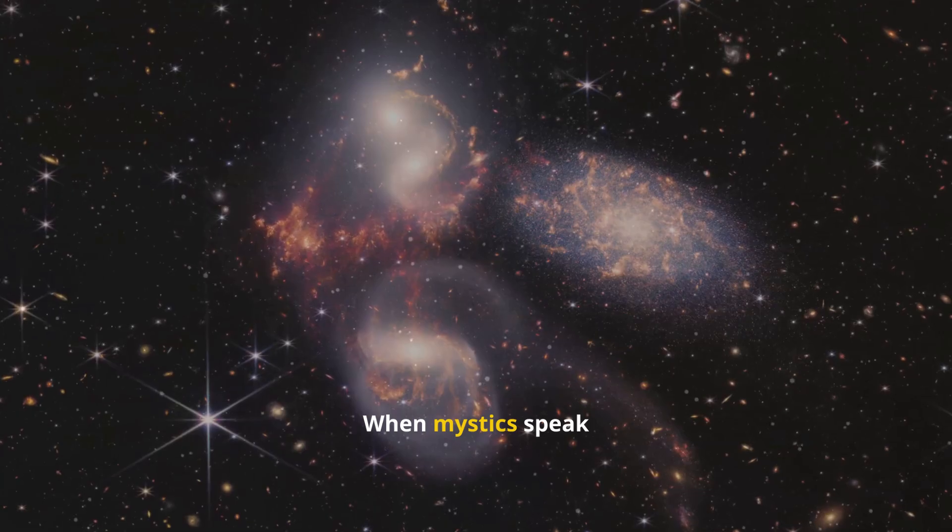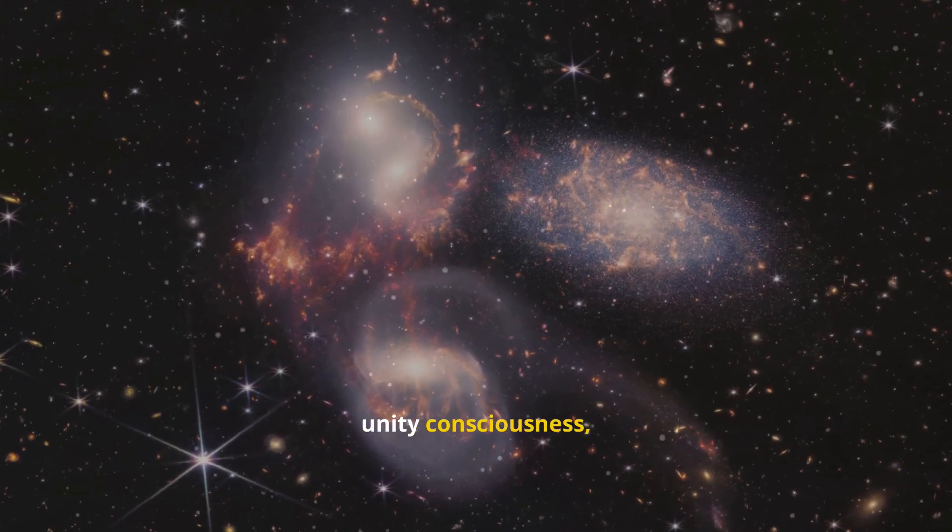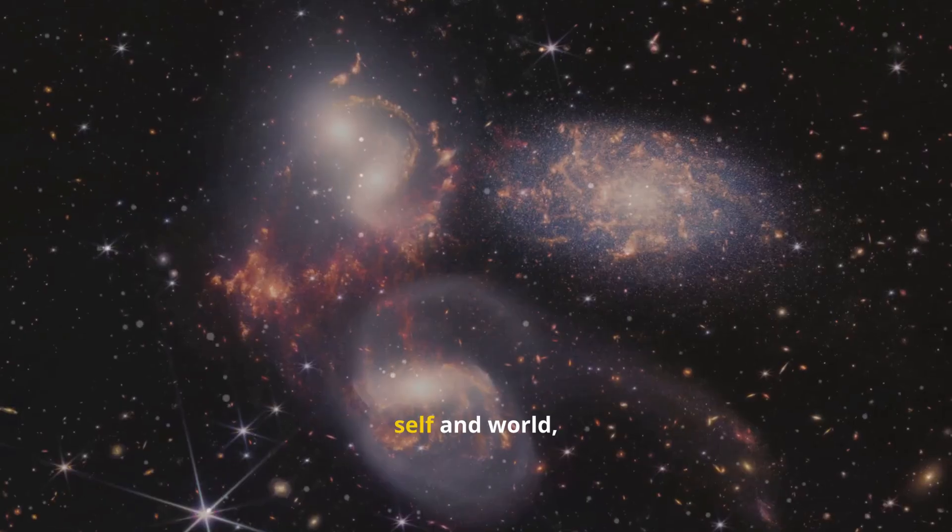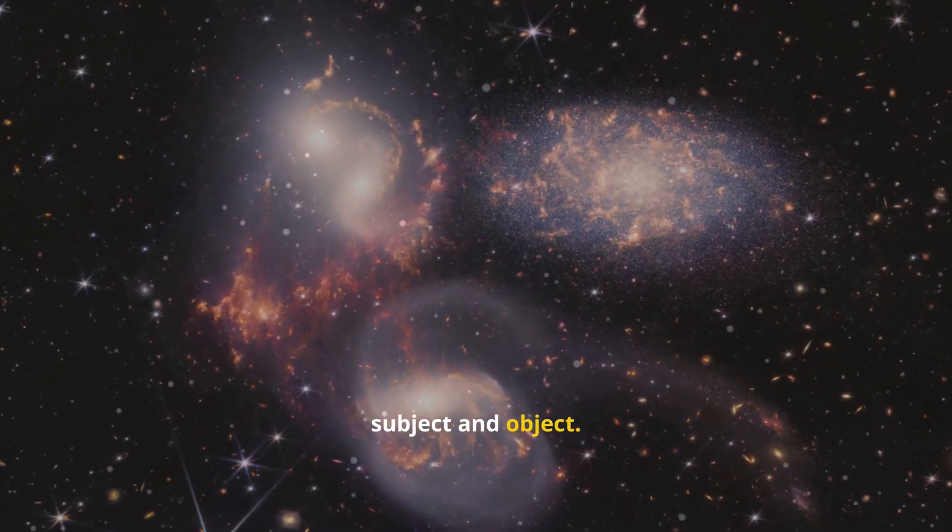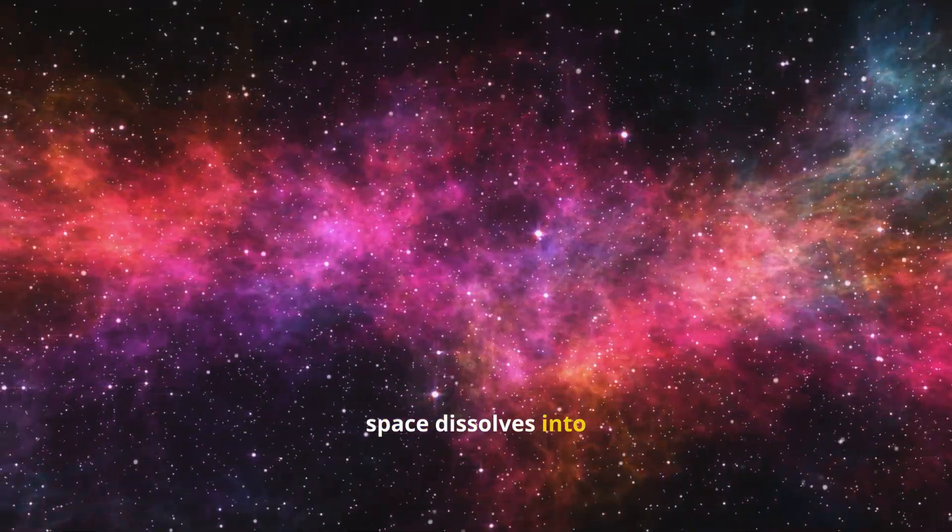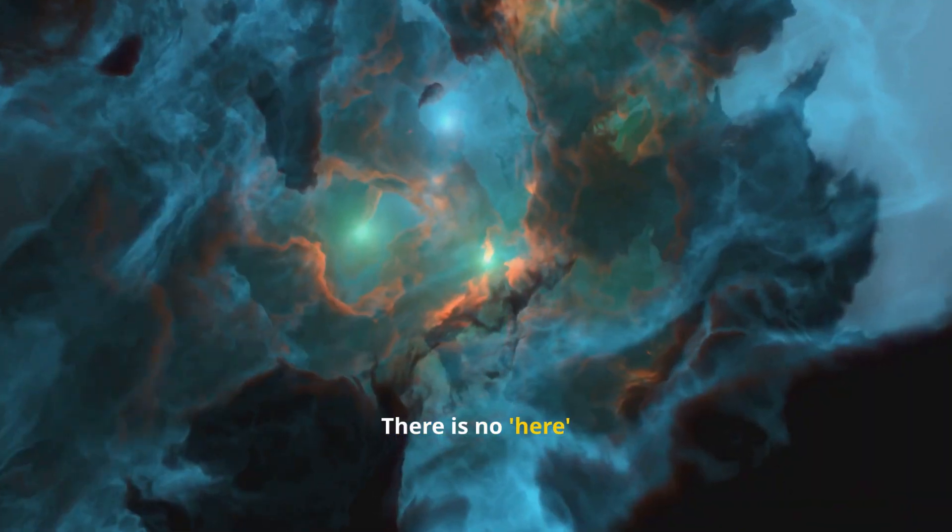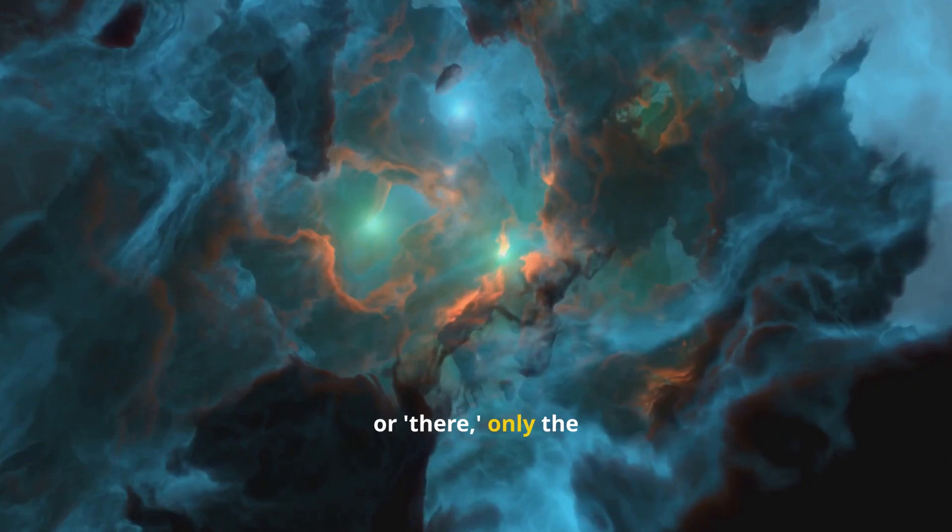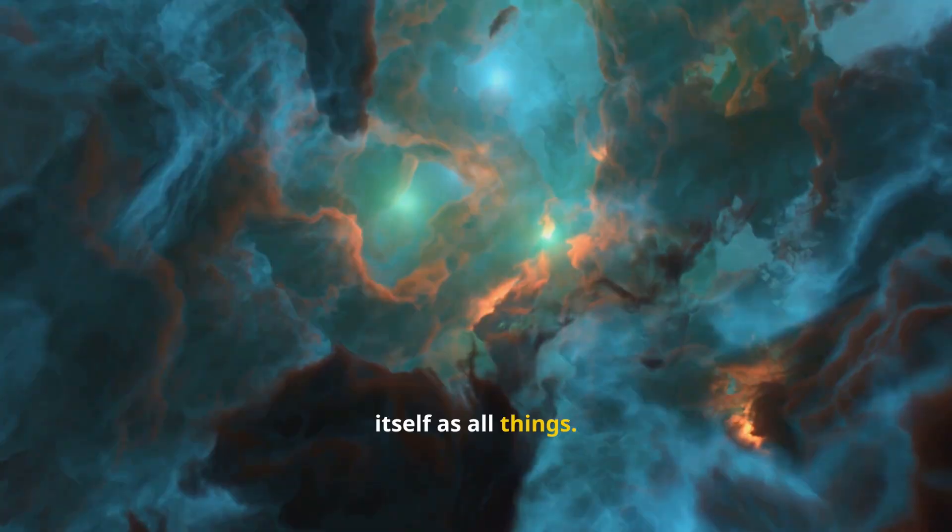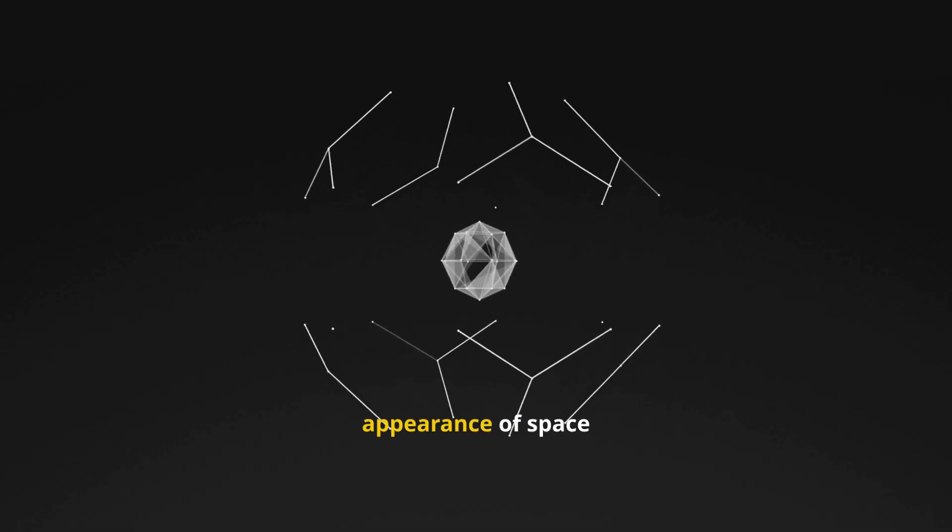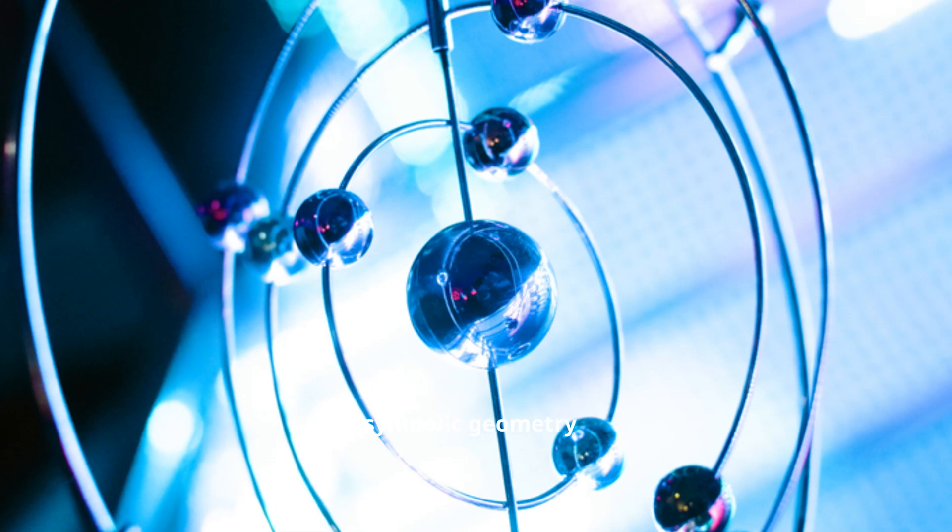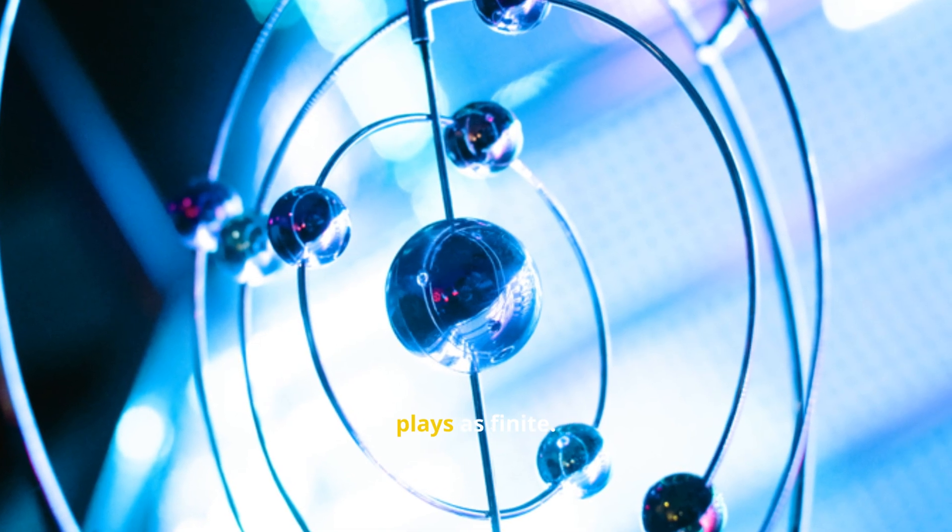When mystics speak of enlightenment or unity consciousness, they often describe the collapse of distance between self and world, subject and object. In these states, the illusion of space dissolves into pure presence. There is no here or there, only the seamless field of awareness perceiving itself as all things. This does not deny the physical appearance of space, but reveals its deeper nature as symbolic geometry, the way the infinite plays as finite.